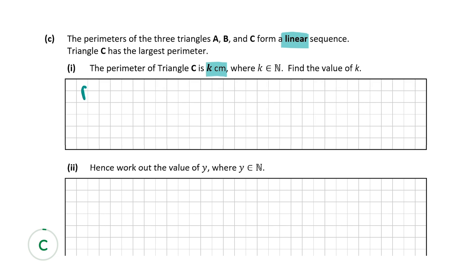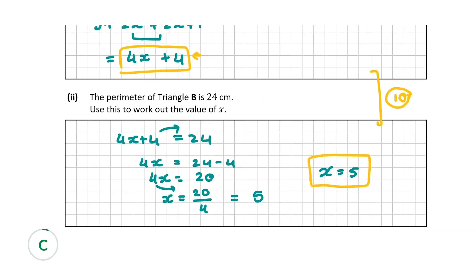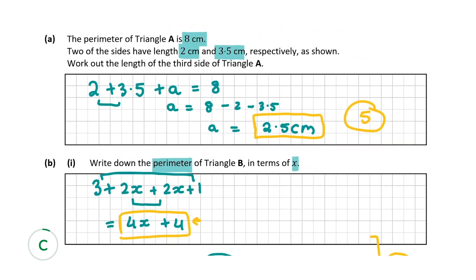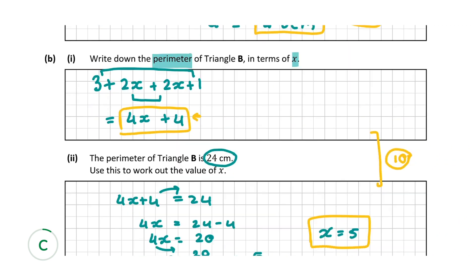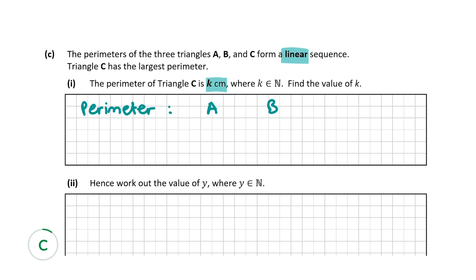So I'm going to write down the perimeter of A and B. So let's scroll back here. So we found out that the perimeter of triangle B was 24 centimeters and we found out that the perimeter of triangle A was 8 centimeters. So it goes 8, 24. So what's the jump between this? So 24 minus 8 is equal to 16. So it jumps by 16 centimeters.